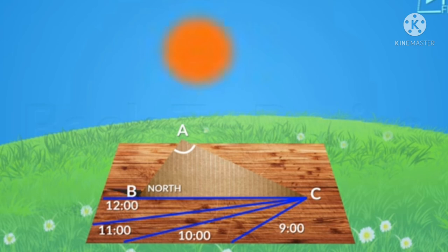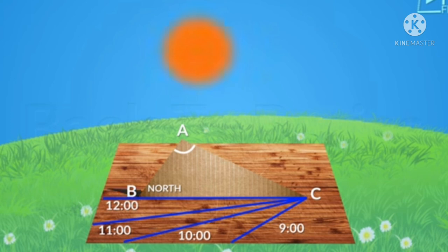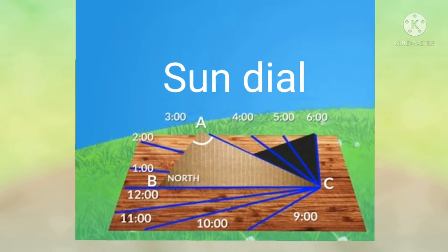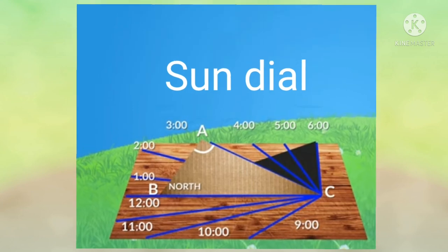Place your board with the triangle on level ground in open space which gets sunlight throughout the day. The base BC of the triangle should be placed in the north-south direction with B pointing to the north. At 9 in the morning, draw a line along the shadow of side AC on the wooden board and write the time alongside the line. Draw lines of the shadow of side AC at 1-hour intervals through the day till sunset and mark the time for each line. Use a clock to check the time. Your sundial is ready. You can tell the time by looking at the shadow on the sundial, but remember that the base BC must always be in the north-south direction to read the time correctly.